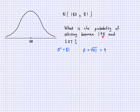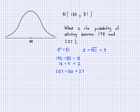We want the probability of selecting someone between 198 and 207 centimetres. We need to find how far these values are from the mean in terms of standard deviations. 198 minus 180 is 18, and 18 divided by 9 is 2 — so 198 is two standard deviations away. 207 minus 180 is 27, and 27 divided by 9 is 3 — so 207 is three standard deviations away.